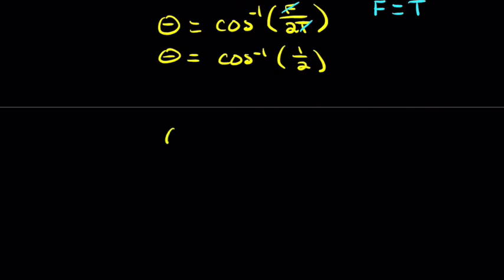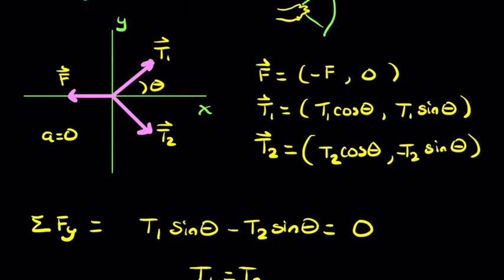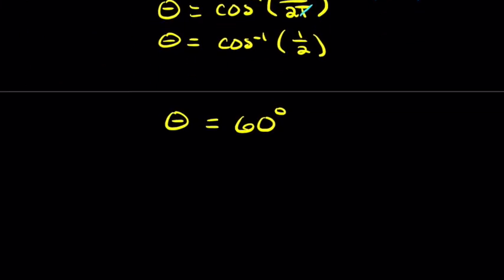So that means that theta equals 60 degrees. And we notice that that is half the amount that we want. We want both of them, the sum of both thetas. We want the full angle between these strings. So that means that the angle that we want equals 2 times 60, which is 120 degrees. And that's our answer.